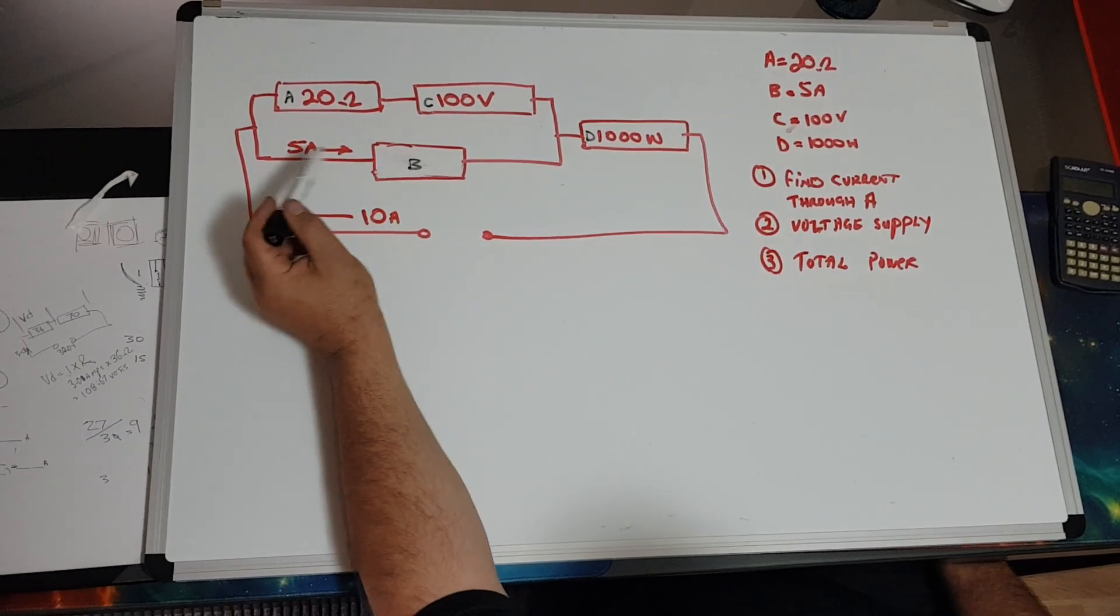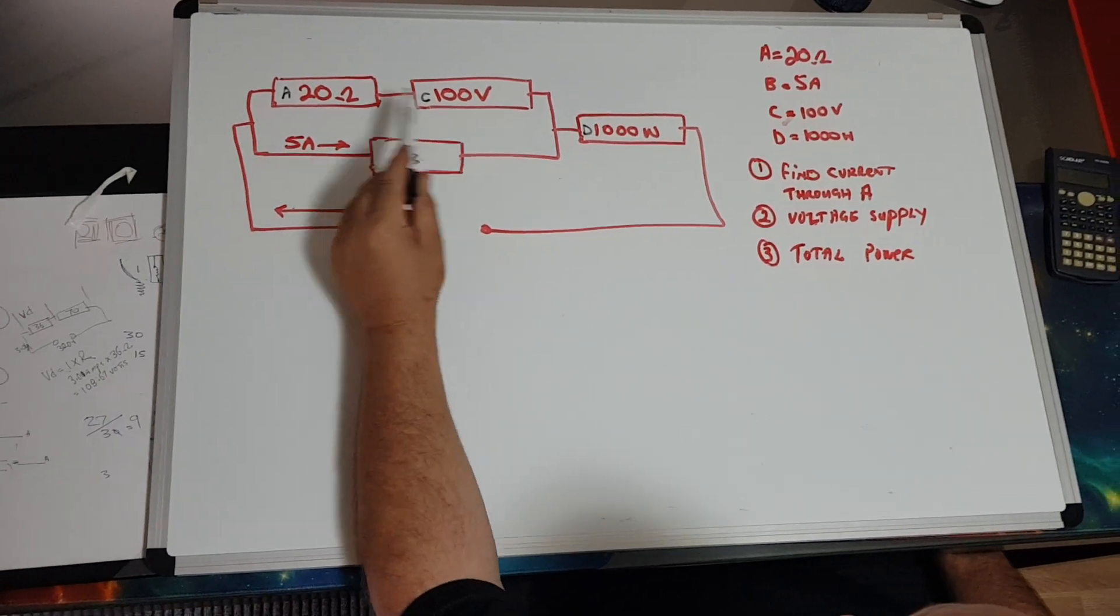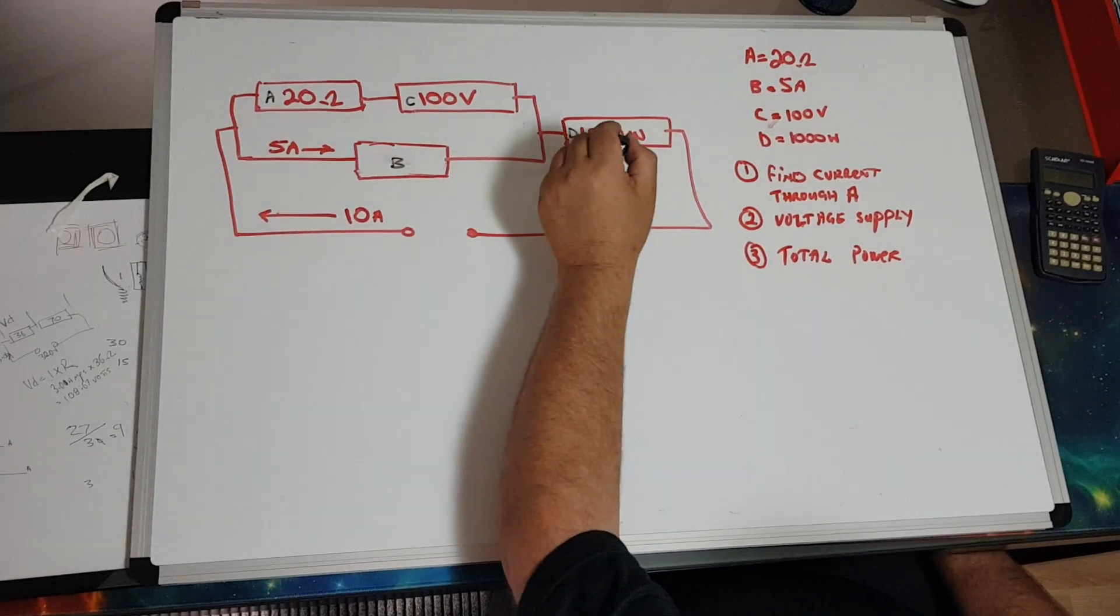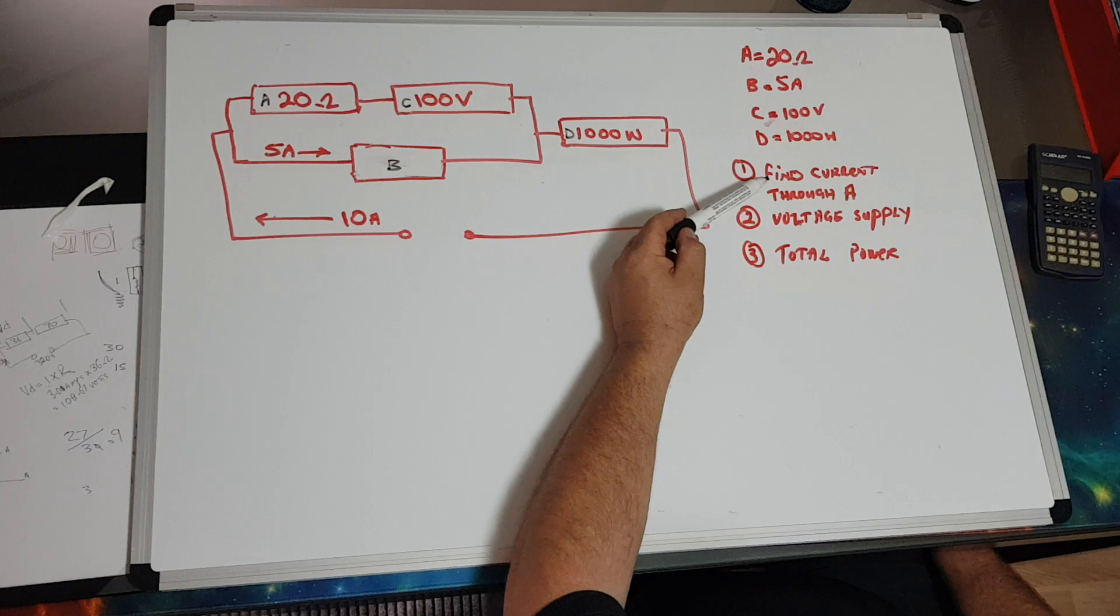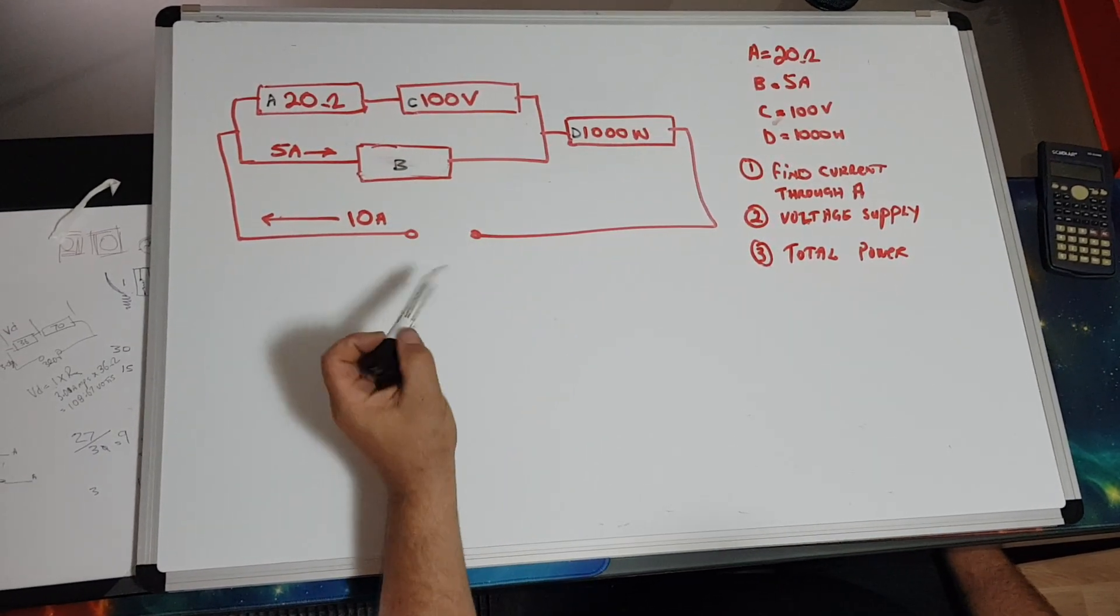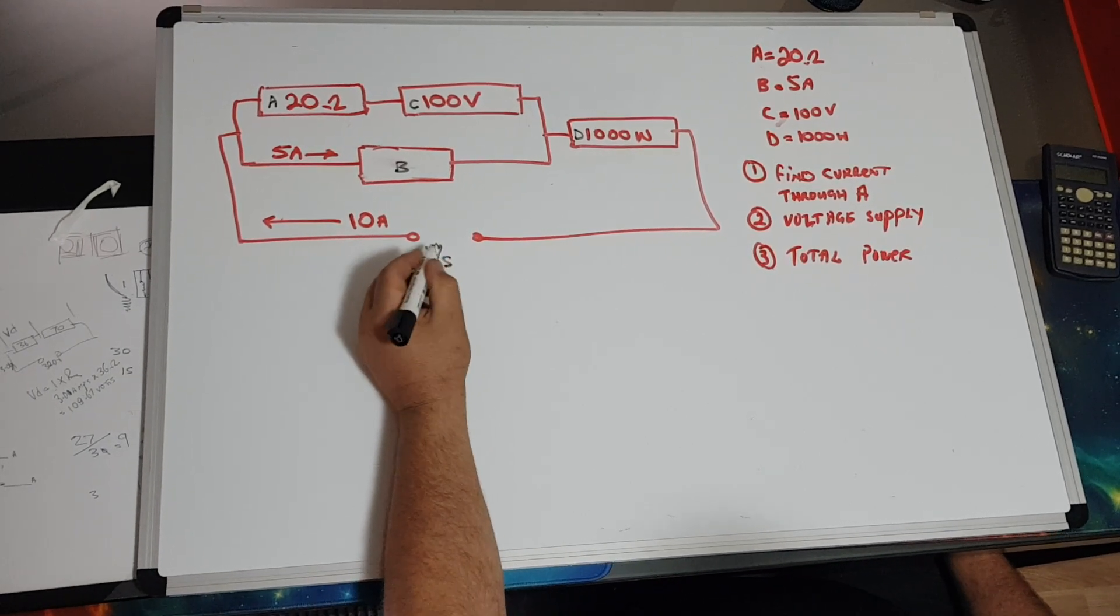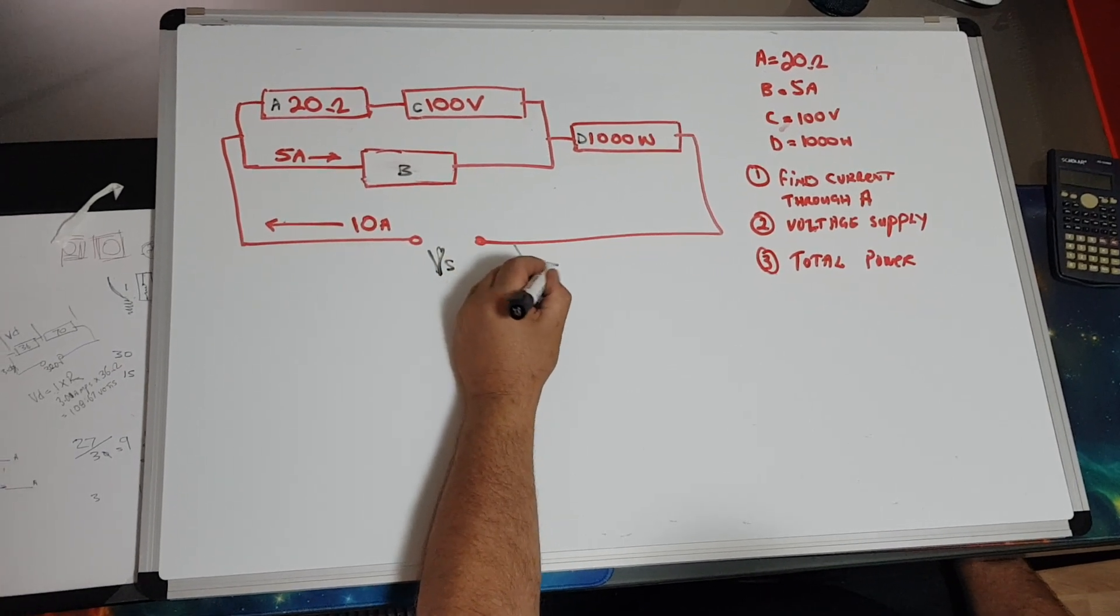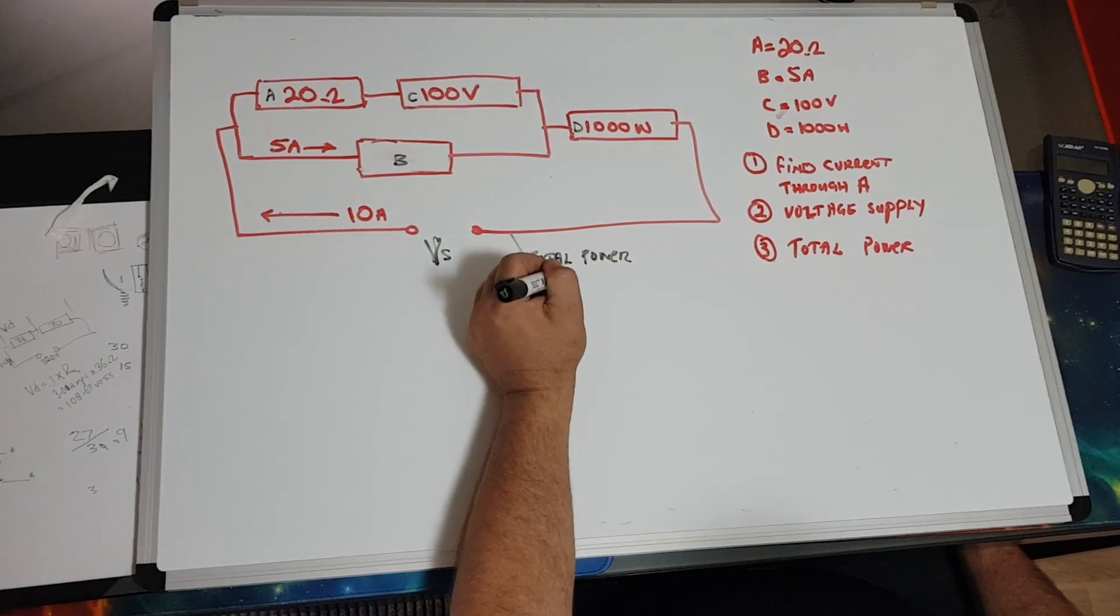And B with 5 amps flowing through, so we have 10 amps in total going through to this point here. We have a thousand watts, so the thing we've been asked to find is the total current flowing through, the voltage supply across here, and our total power for the circuit.